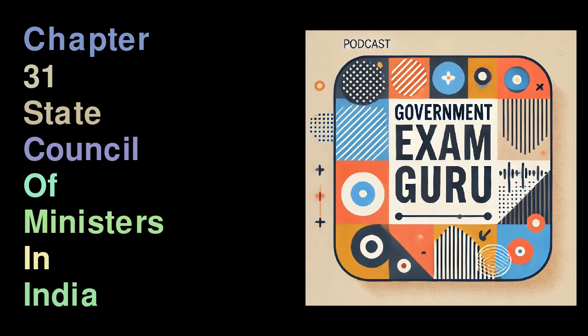In India, the Chief Minister of a state is appointed by the governor. After the Chief Minister is chosen, the governor then appoints other ministers based on the Chief Minister's advice, meaning the governor can only appoint people as ministers if the Chief Minister recommends them. In certain states like Chhattisgarh, Jharkhand, Madhya Pradesh, and Odisha, there is a special requirement to have a minister focused on tribal welfare. The 94th Amendment Act of 2006 removed the obligation for Bihar to have a tribal welfare minister, since there are no scheduled areas in Bihar and the number of scheduled tribes living there is very small. However, this amendment extended the requirement to the newly created states of Chhattisgarh and Jharkhand.